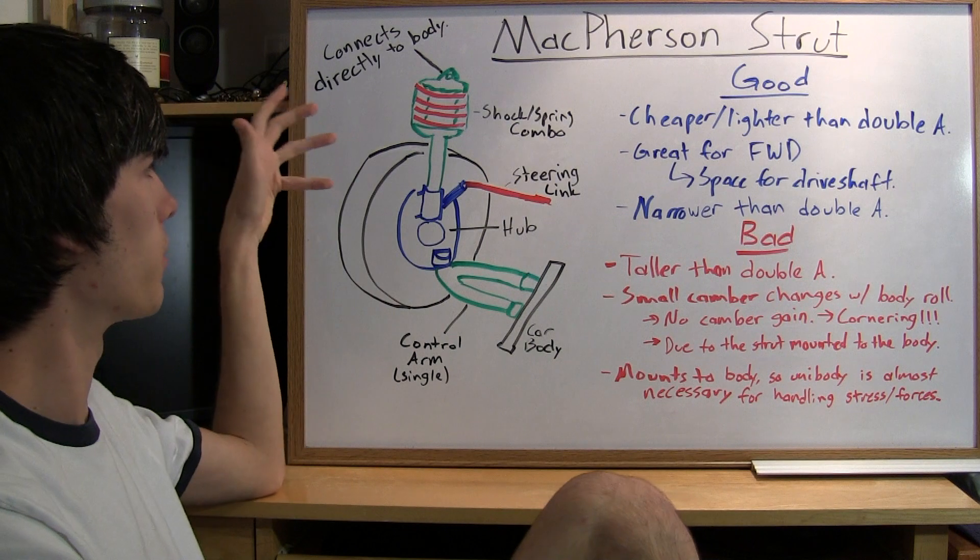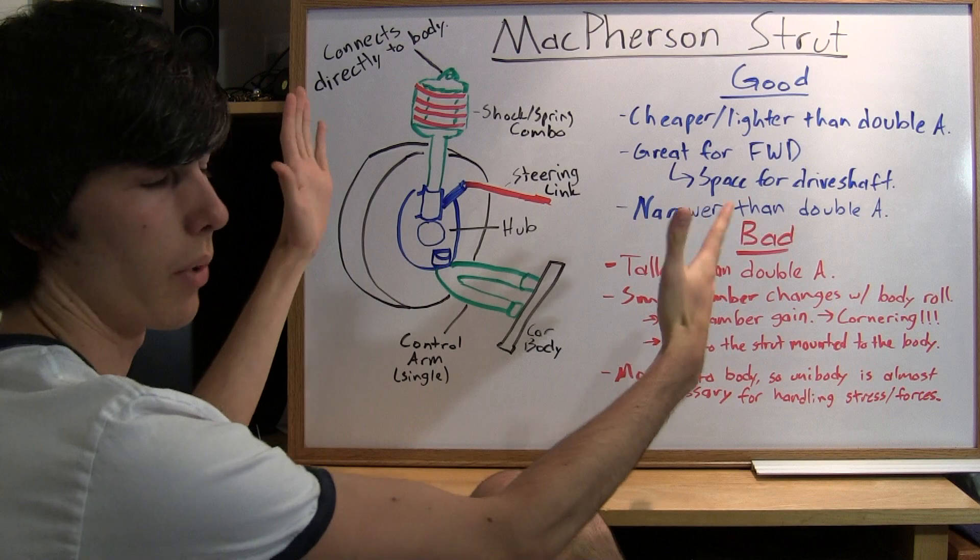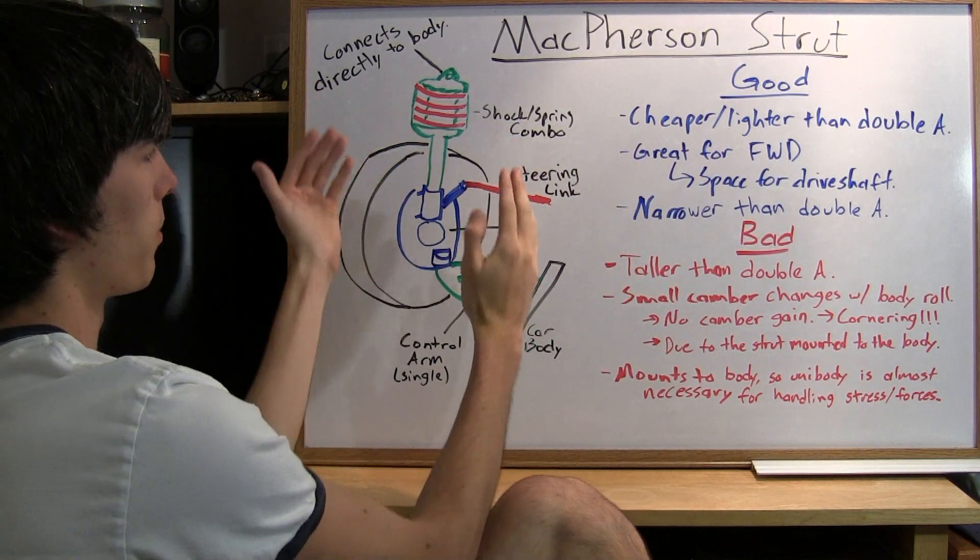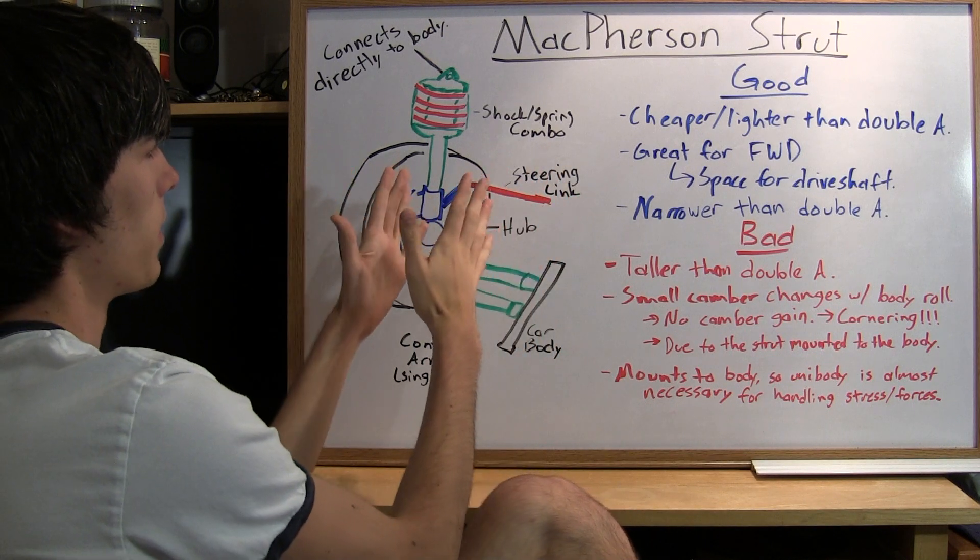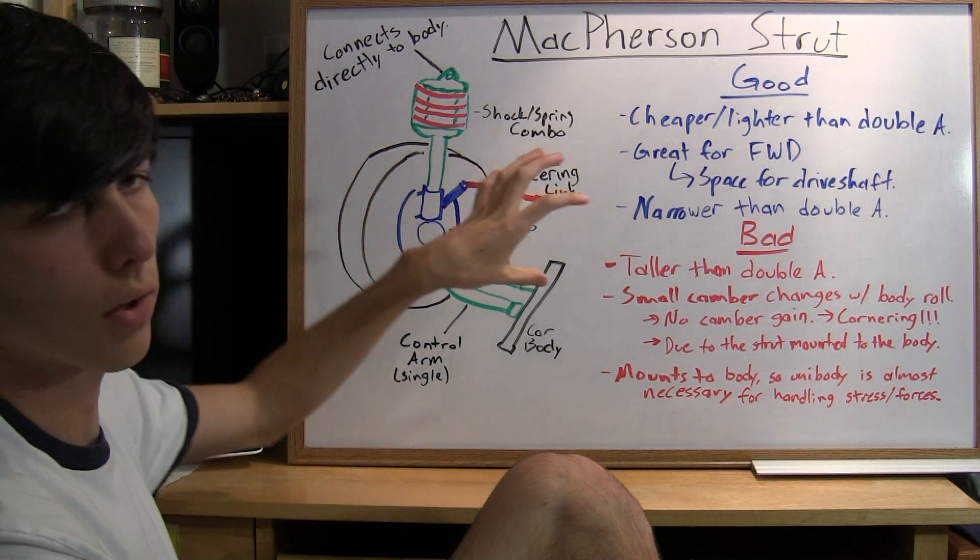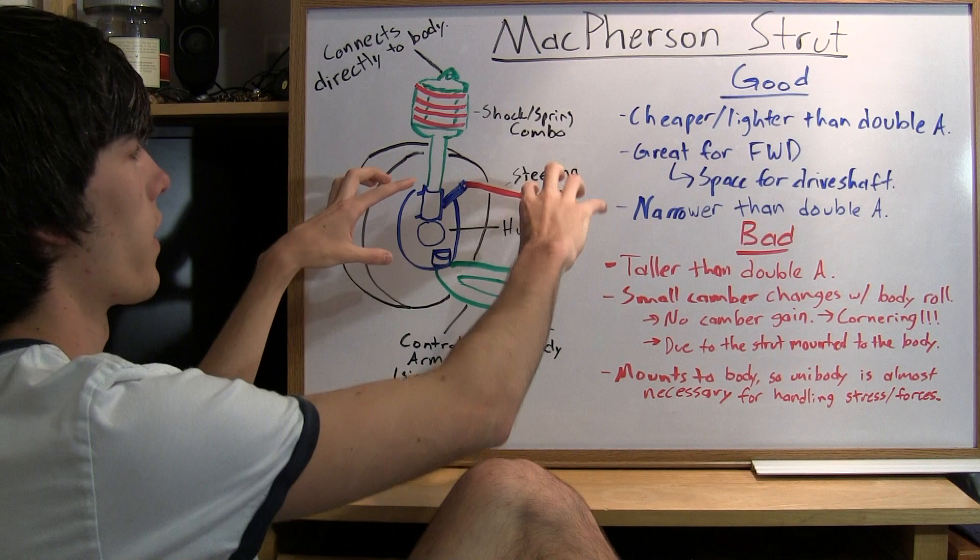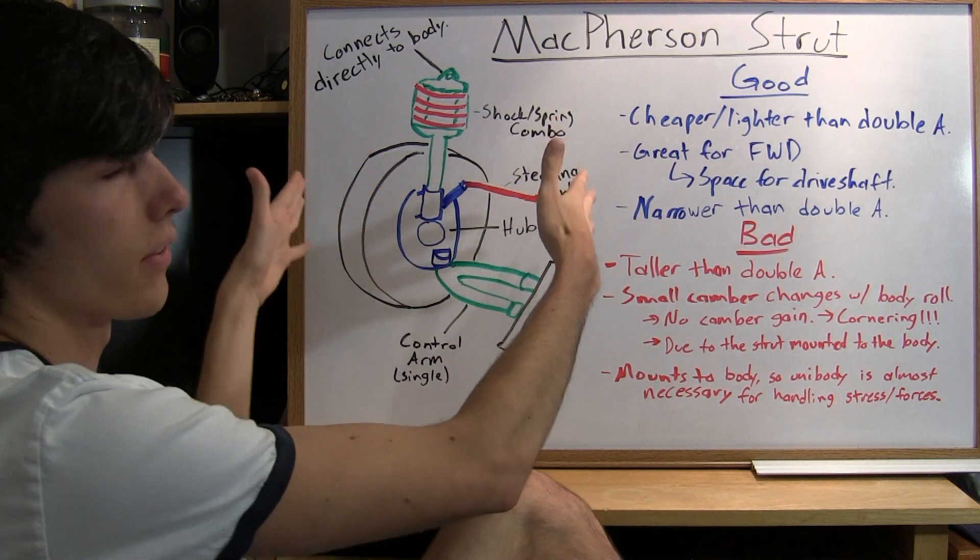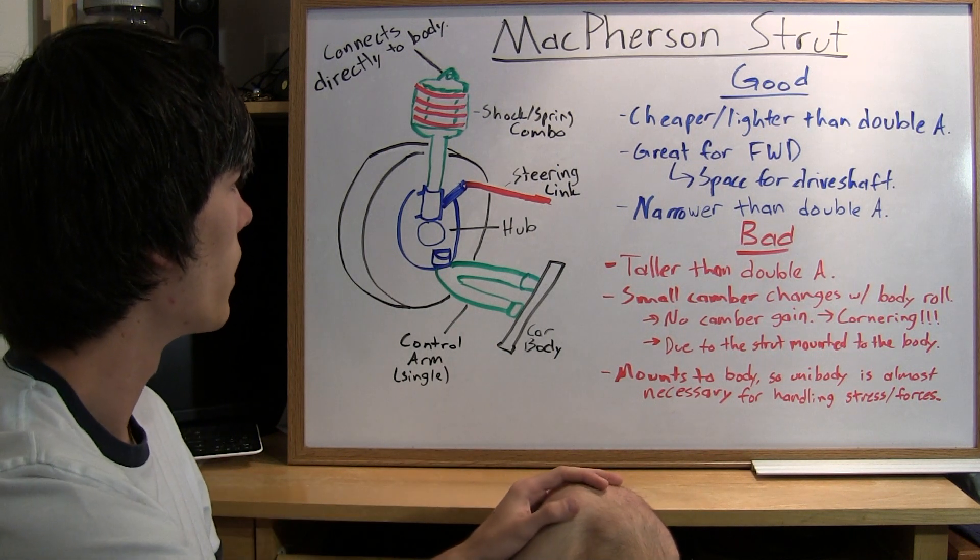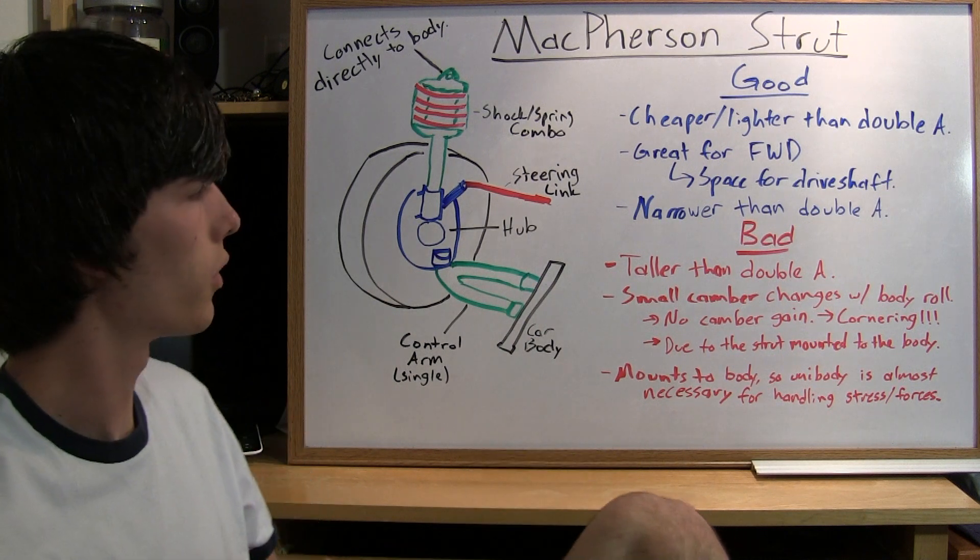Another benefit is that the McPherson strut is narrower than a double A arm or double wishbone. The space from the tire to the car itself is minimized, so you can locate this in smaller areas than with two control arms. With a double wishbone, you've got one long one at the bottom and a shorter one at the top, requiring large space in your vehicle. That's one negative side of the double wishbone suspension.